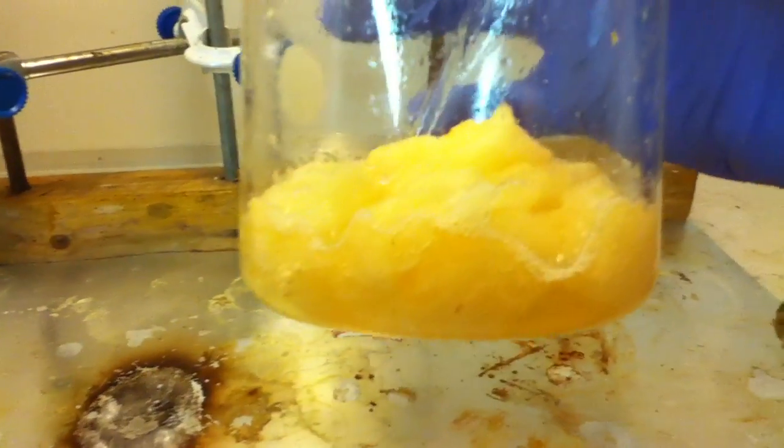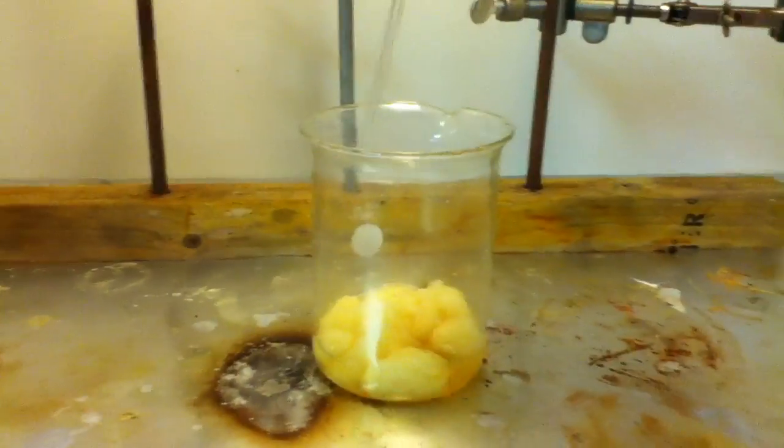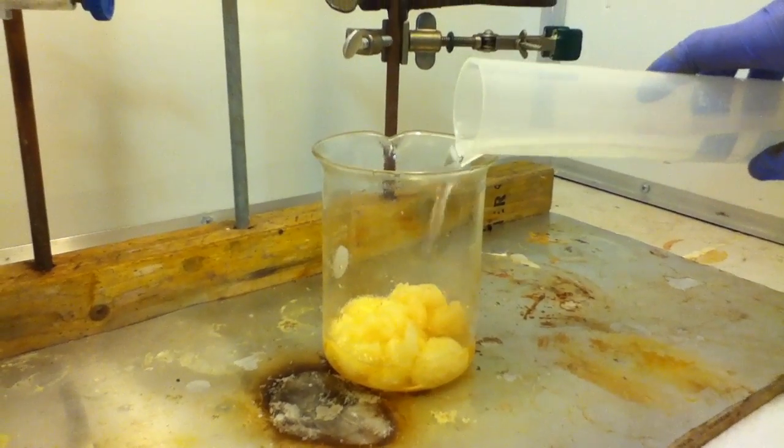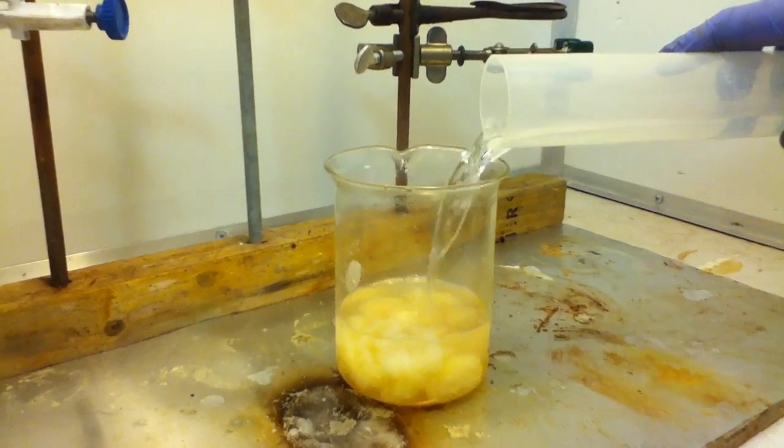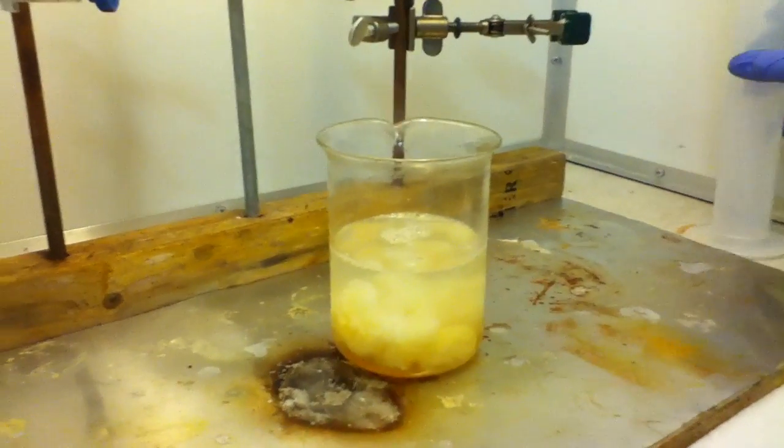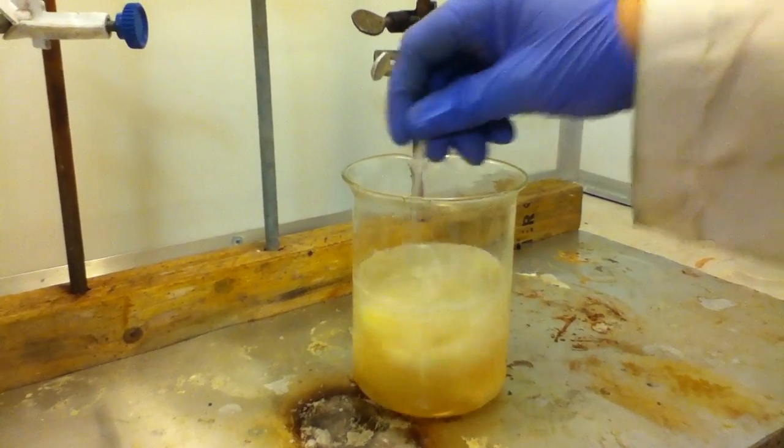This is what our mixture looked like after about half an hour. Let the solution soak for 45 minutes, and then add dilute aqueous base. We use potassium hydroxide solution. Wash the solution thoroughly with water. Be careful though, because the solution may still be acidic.